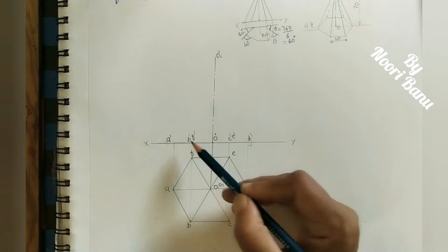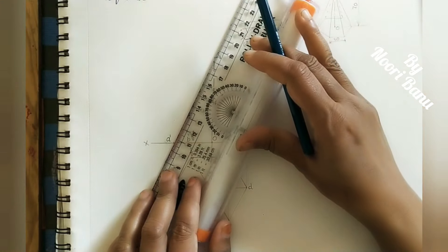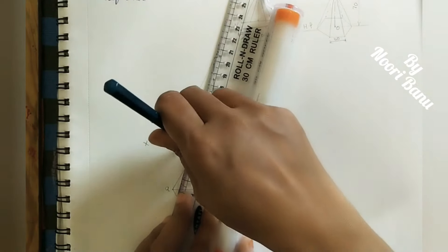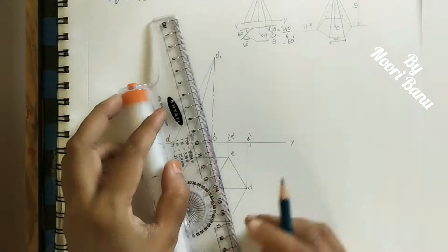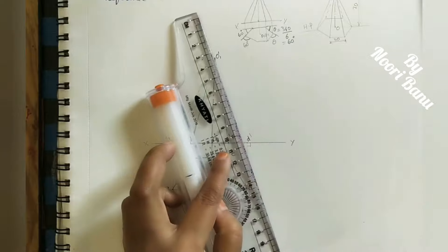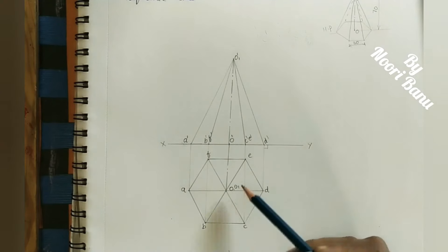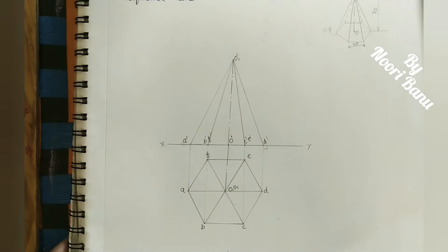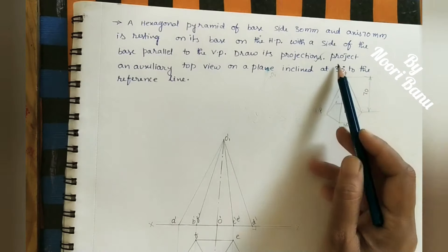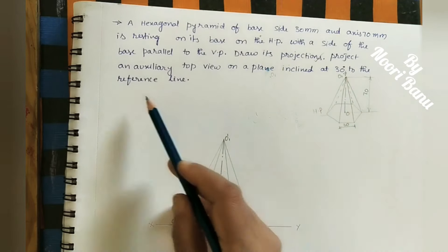Now join all these points with the apex — those are the slanted edges. This completes the front view and the top view. These two views are called the projections of this pyramid. We have completed this part. Now we need to project an auxiliary top view on a plane inclined at 30 degrees to the reference line.